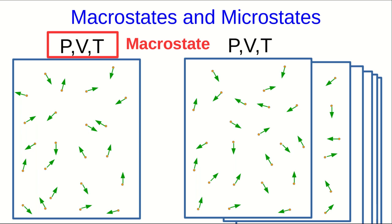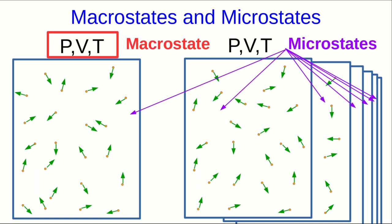The pressure, volume, and temperature is called the macrostate. These are macroscopic variables that we can measure in the lab, whereas the set of values for all of the positions and velocities of the atoms in the box are referred to as the microstates of this macrostate. These are the microstates that correspond to this macrostate.